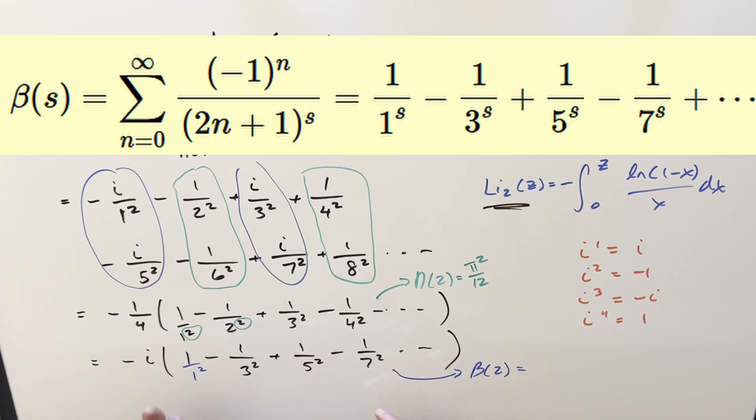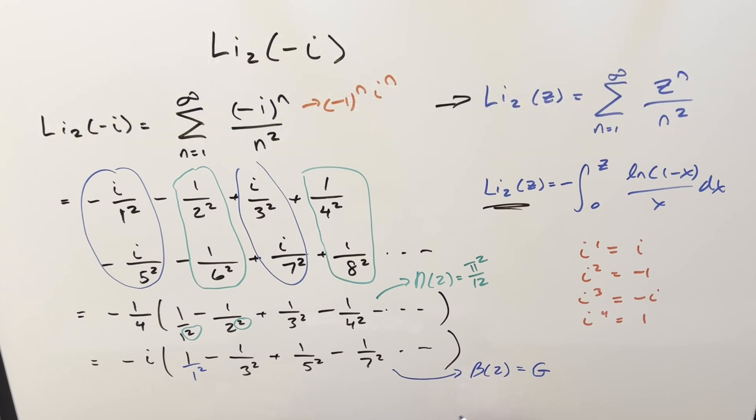But this is the same value as Catalan's constant, which I've seen written with a G, I've seen written with a C. But Catalan's constant is something like 0.9164723. Okay, actually, I made up a lot of those decimals or I was way off. But I got the first part, it's 9159. So that's pretty close, but the rest of it was made up. So we got something like that for Catalan's constant.